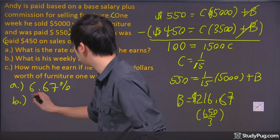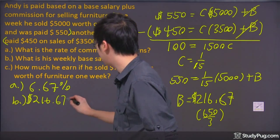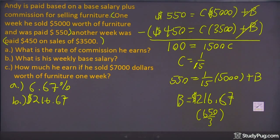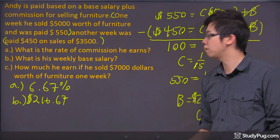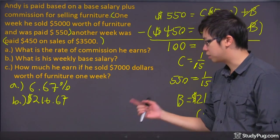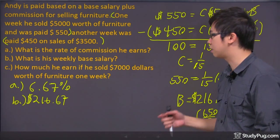I'm going to use the money symbol. $216.67 cents. That's how much money the base salary that I'm getting. Even selling nothing at all, I still got $216.67.